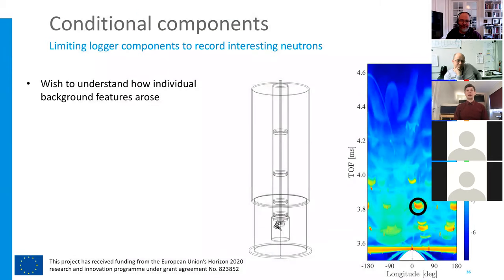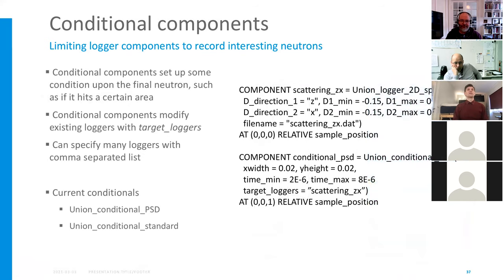Again, however, I would argue that this is not sufficient information to actually inform decisions, because we need to understand how to eliminate these background problems for a given measurement. What if, say, that spot there at 3.8 milliseconds and around 20, 30 degrees is what's obscuring the physics that we want to measure? How would we know where that background originated? Well, that's another type of union component that will help us here, called a conditional component. And what they do is that they will modify a logger component to only record information in case some final condition on the neutron is satisfied.